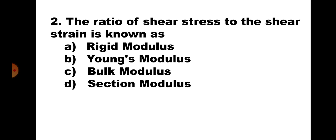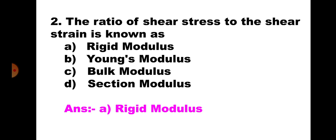Question number 2. The ratio of shear stress to the shear strain is known as: A. Rigid modulus, B. Young's modulus, C. Bulk modulus, D. Section modulus. This is the definition of modulus of rigidity, or shear modulus, or rigid modulus. Hence, the correct answer is A. Rigid modulus.